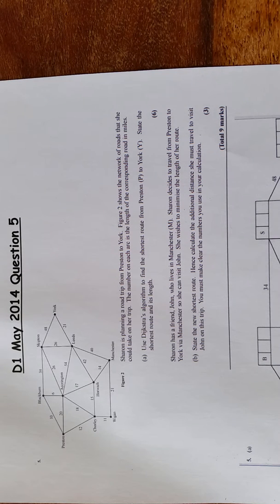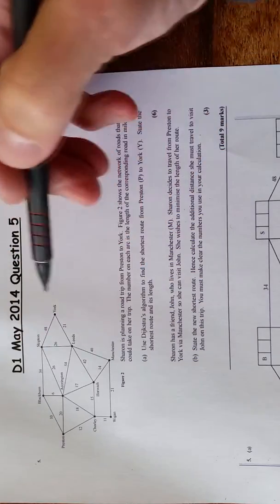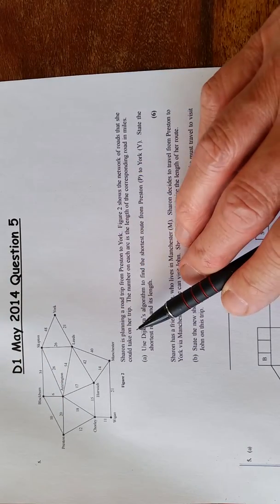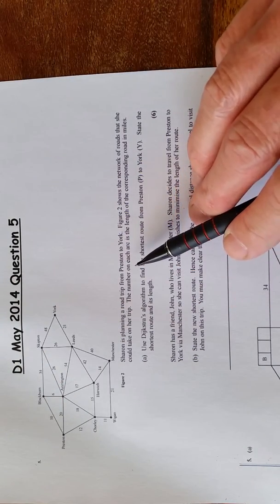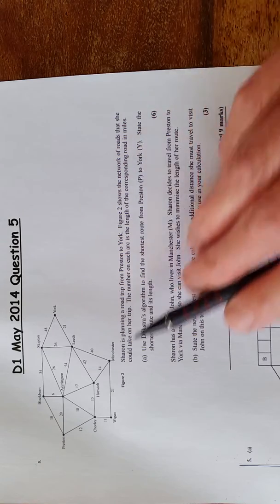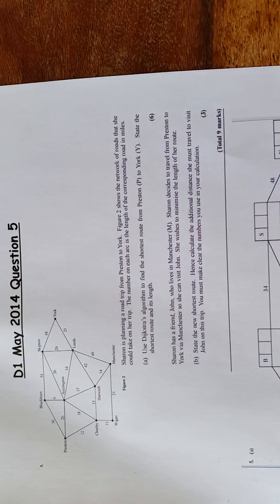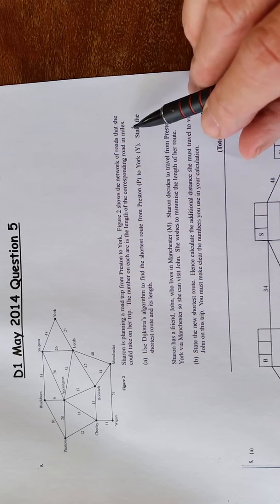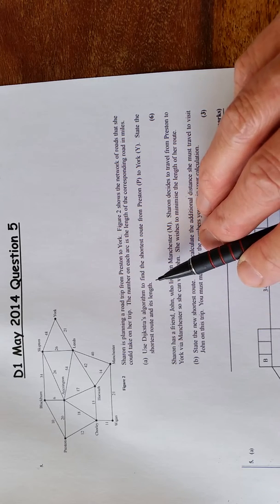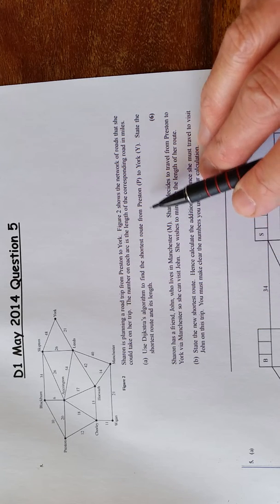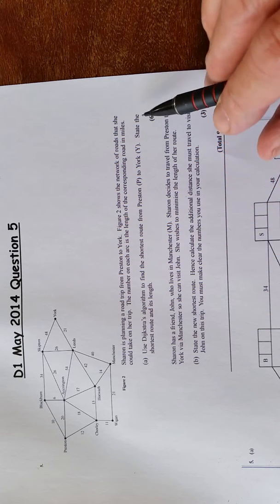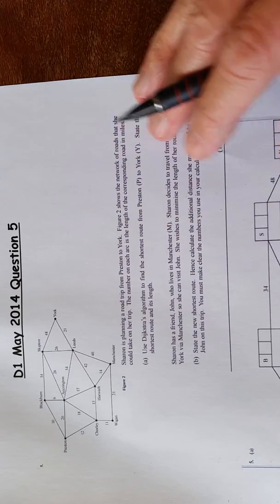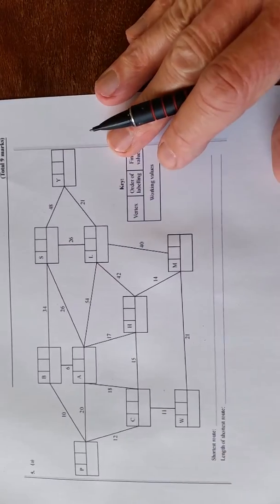Question 5 is about Dijkstra's algorithm. We've got a network here and it says Sharon is planning a road trip from Preston to York. Figure 2 shows the network of roads she could take on her trip. The number on each arc is the length of the corresponding road in miles. Use Dijkstra's algorithm to find the shortest route from Preston P to York Y. State the shortest route and its length. So let's have a look at this.